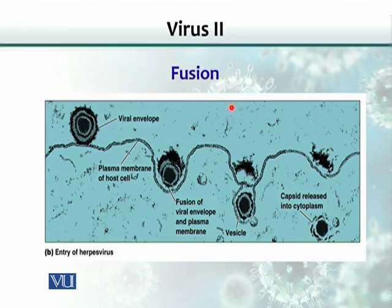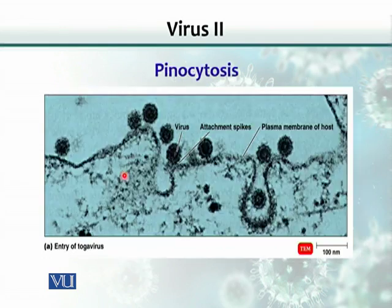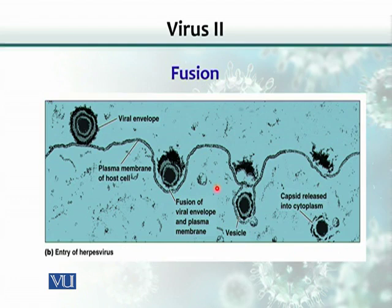Fusion, on the other hand, is mediated by the virus itself — mostly by envelope proteins present on the viral envelope — through interaction with the receptor on the host cell. In pinocytosis, only attachment occurs and the rest is done by the host cell. In fusion, the viral spikes present on the envelope actively mediate penetration of the host cell.